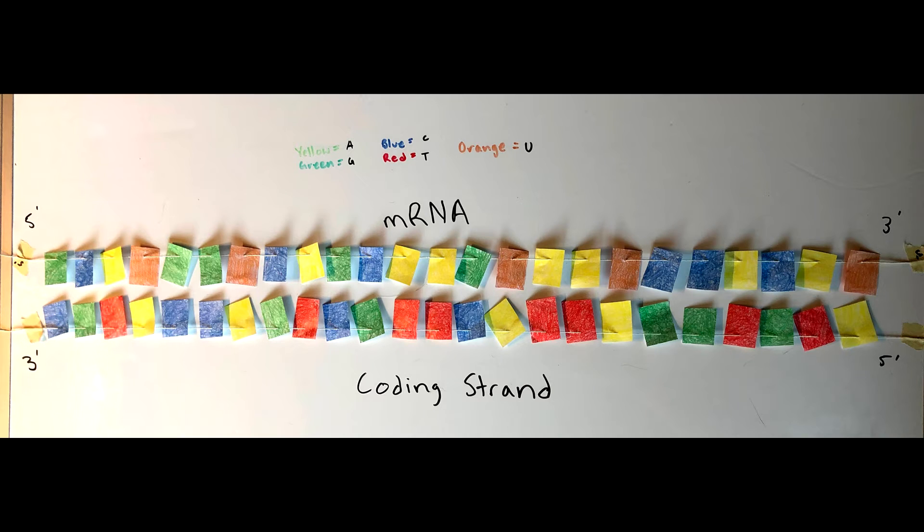This is the coding strand and the mRNA that will be made after transcription. Orange rectangles are uracil, red is tyrosine, yellow is adenine, green is guanine, and blue is cytosine.